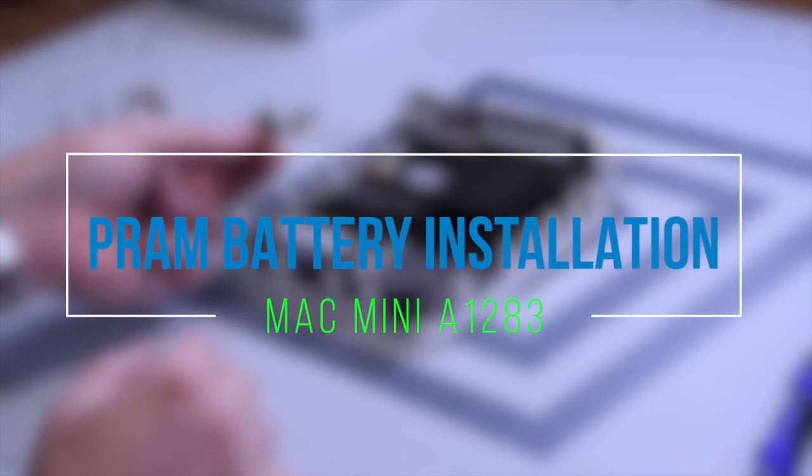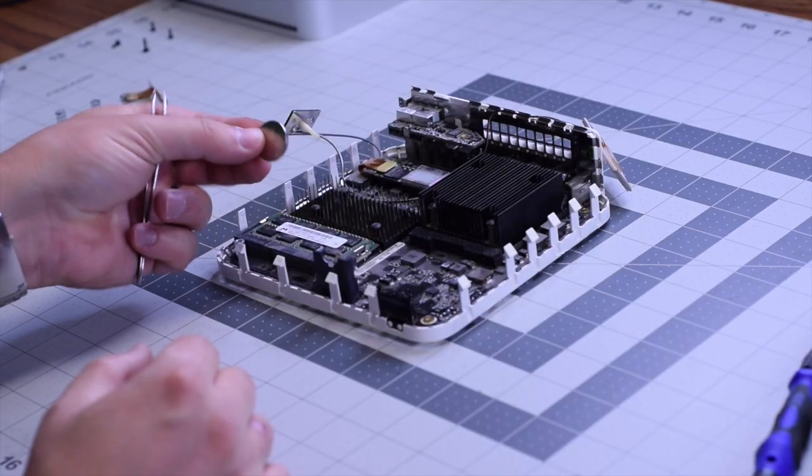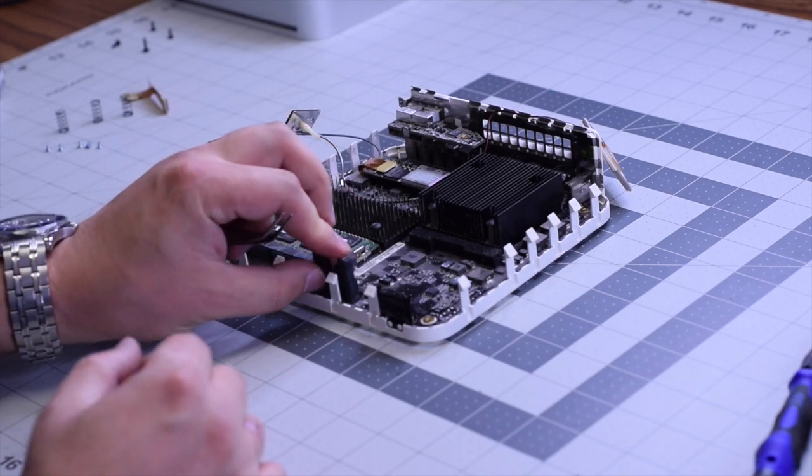PRAM battery installation. You can just pop the battery in with the negative facing you.